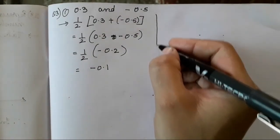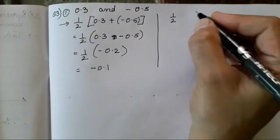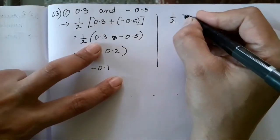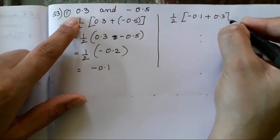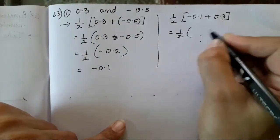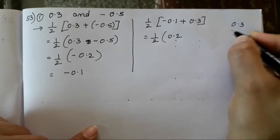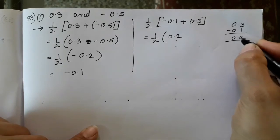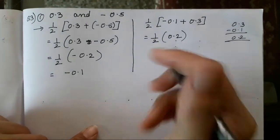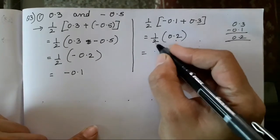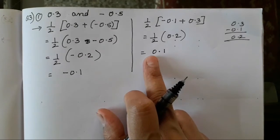Now use this number and the previous ones to find more. Again the same step: half of (−0.1 + 0.3). For subtraction: 0.3 and 0.1 — sign of the bigger number is plus — so the result is 0.2. Divide by 2: the answer is 0.1. So our second rational number is 0.1. Minus 0.1 is the first one and plus 0.1 is the second.